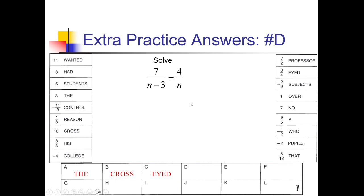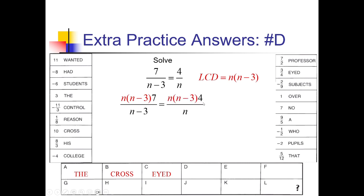For problem D, we have two fractions with an equals between them — we could cross-multiply, but I'll use the LCD approach. The LCD is n(n minus 3). Multiplying through: the n minus 3s cancel on the first fraction, the n's cancel on the other. So we get 7n equals 4(n minus 3), which is 4n minus 12. Subtracting 4n: 3n equals negative 12, so n equals negative 4. That doesn't zero out any denominator, so 'college' goes in spot D.